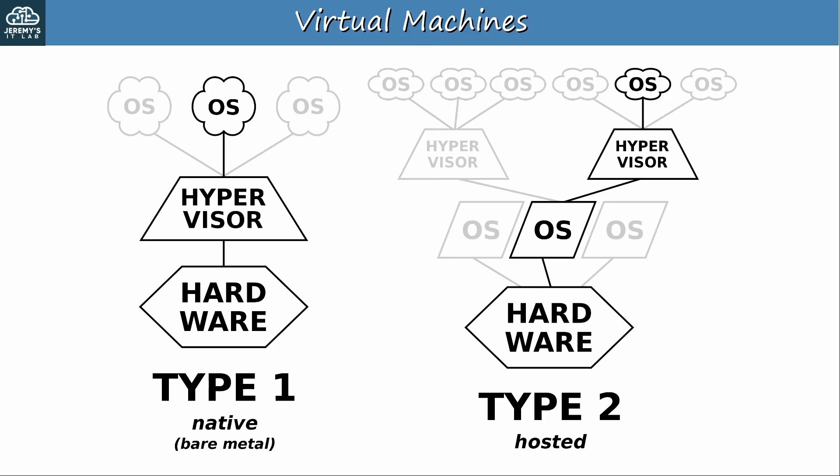Here's a simple diagram to help you visualize the difference between type 1 and type 2 hypervisors: type 1 runs directly on hardware, and type 2 runs on a host OS. Virtualization using VMs allows much more efficient use of server hardware, and VMs are widely in use today. However, containers are a more recent virtualization technology being used more and more. Let's move on to the main topic of today's video — containers — and then compare them to VMs.